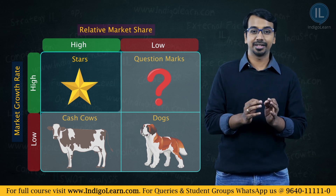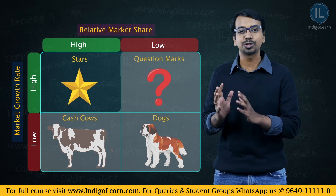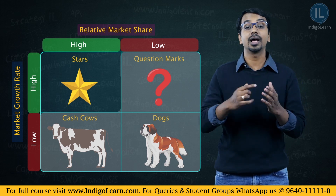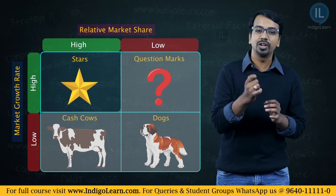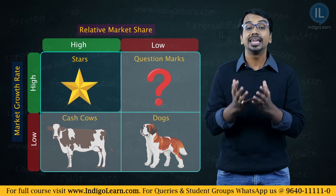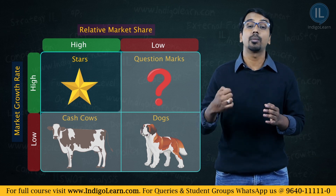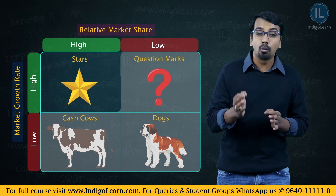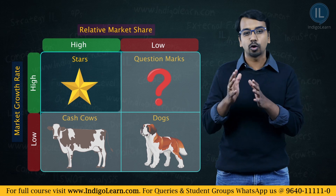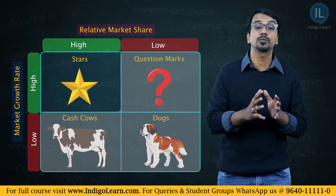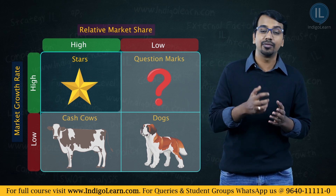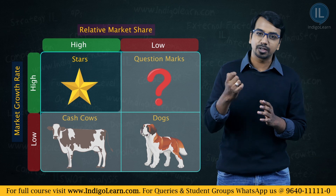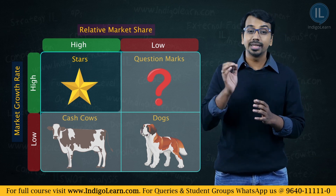The first category is the star category — a product in a market which has a high growth rate, and at the same time the product also has a relatively high market share. The market is booming and growing very fast, and in that growing market, the particular product has a very high market share — it's like a win-win situation. Because the product has a high market share, it will generate a lot of cash. But in a fast-growing market, more and more competition would come in, so the firm will have to spend more money on marketing and on creating new facilities to meet increasing demand. So there is high cash inflow on one side and high cash outflow on the other.